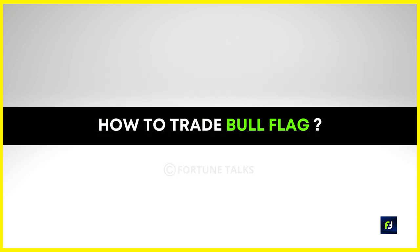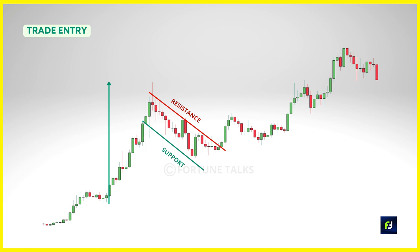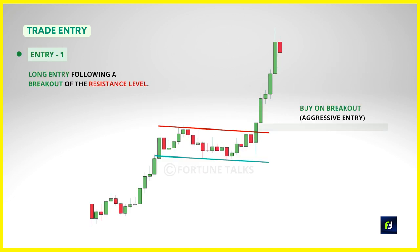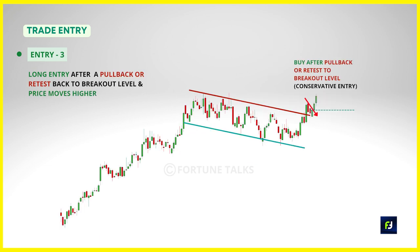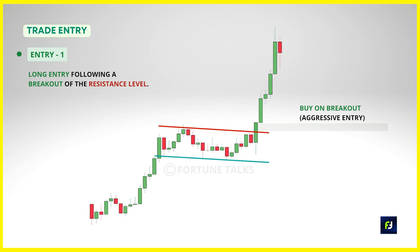Now let's discuss how to trade the flag pattern — entry methods, stop loss placement, and target setting. For the entry criteria, since it is a bullish continuation pattern, we are only interested in the break above the resistance line. You can take a long entry following a breakout — either at the moment the price breaks above the resistance trendline, or above the high of the breakout candle after it closes. The second method is to wait for a pullback or retest back to the breakout level, then take a long entry when the price moves higher.